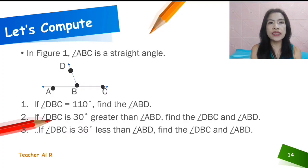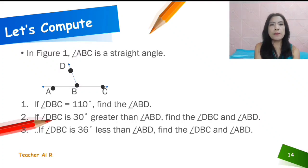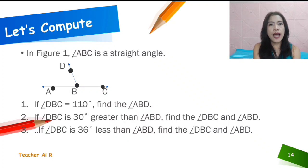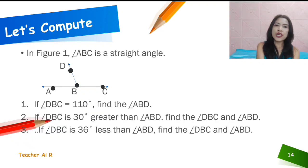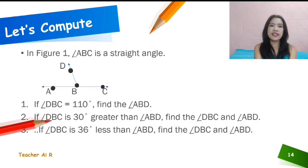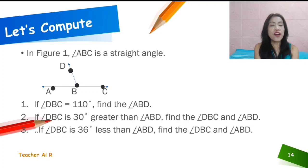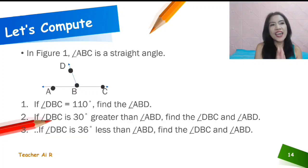Let's compute for this one. In figure 1, we have the angle ABC as a straight angle. If the angle BDC is equal to 110, find the angle ABD. If the angle DBC is 30 degrees greater than the angle ABD, find the angle DBC and the angle ABD. And number 3, if the angle BDC is 36 degrees less than the angle ABD, find the angle BDC and the angle ABD.